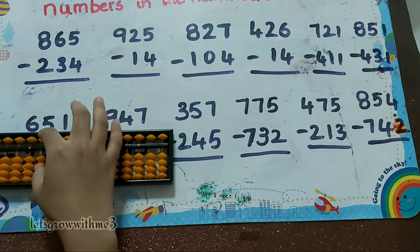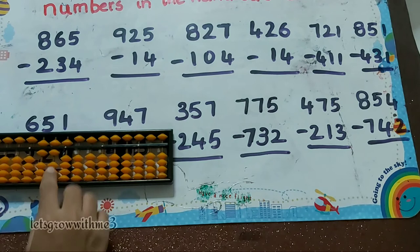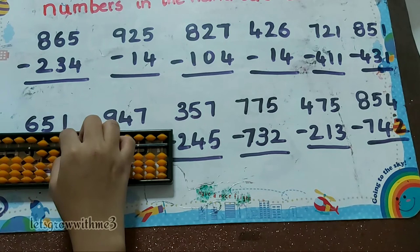865 minus 234: minus 2, minus 3 — how to do minus 3? Minus 5 plus 2. Next, minus 4: minus 5 plus 1. So the answer is 631.